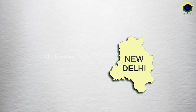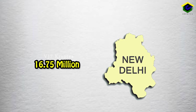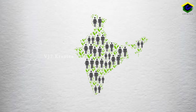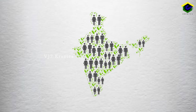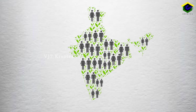Delhi with 16.75 million population tops among the union territories. The uneven distribution of population in the country is the result of several factors such as physical, socio-economic and historical ones.